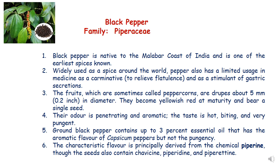Pepper has limited usage in medicine as a carminative to relieve flatulence and as a stimulant of gastric secretions. The fruits, sometimes called peppercorns, are drupes of about five millimeters in diameter; they become yellowish-red at maturity and bear a single seed. The odor is penetrating and aromatic; the taste is hot, biting, and very pungent. Ground black pepper contains up to three percent essential oil. The characteristic flavor of black pepper is principally due to the alkaloid piperine, though the seeds also contain chavishine, piperidine, and piperitine.